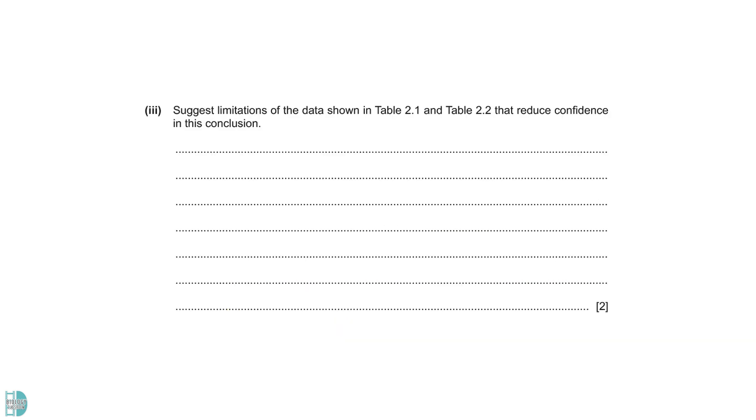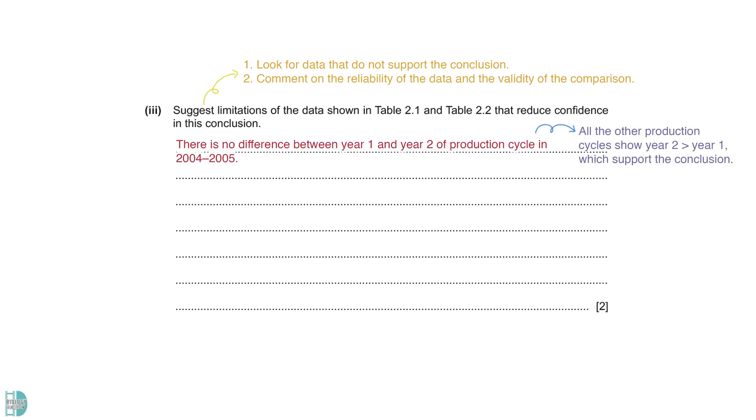Question 3: Suggest limitations of the data shown in Table 2.1 and Table 2.2 that reduce confidence in this conclusion. To answer this question, you should look for data that do not support the idea that the risk of death is greater in year 2. You can also comment on the reliability of the data or the validity of the comparison. Even though in most of the production cycles, the percentage of trout with 13 or more lice is greater in year 2, there is an exception. In 2004 and 2005, there is no difference between year 1 and year 2. The data collected may not be reliable due to the small sample size. In each year, there are only a small number of sea trout being sampled. Besides, only 5 production cycles are being studied.